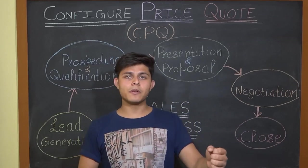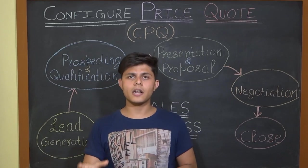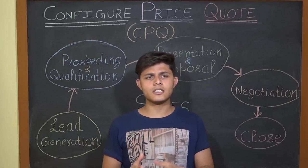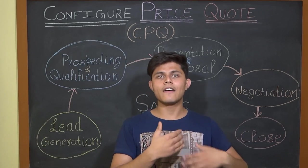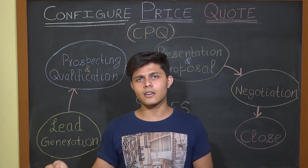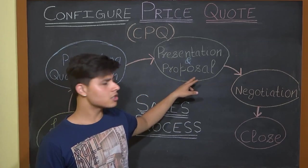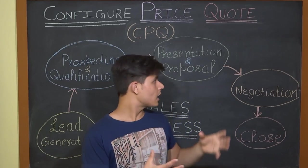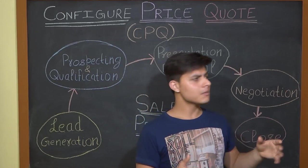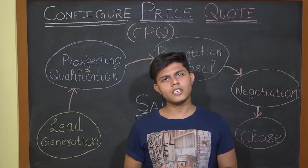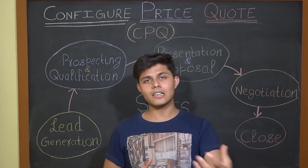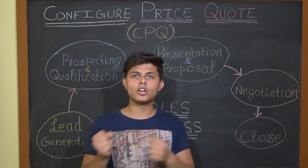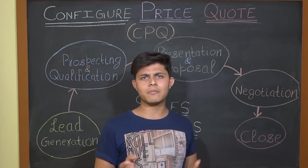After prospecting and qualification comes the step of presentation and proposal. Once you've identified the people interested in your product or service, you give them a presentation showing how your product works and its benefits. Then you provide a proposal — basically a quote based on the needs and requirements of their business. This leads to the next step: negotiation, where you negotiate discounts and work toward closing the deal.